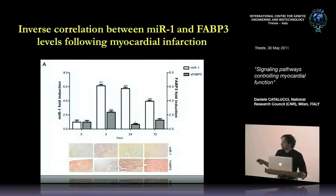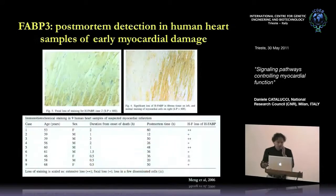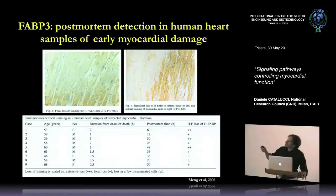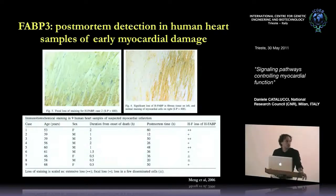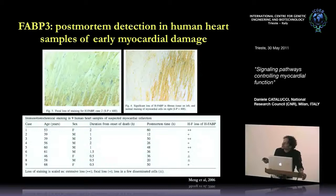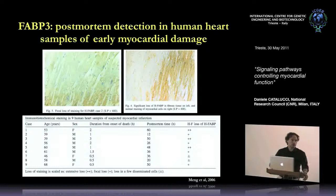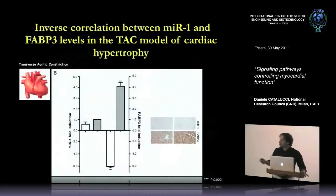We also found supporting evidence in the literature from patients — specifically from biopsies from people who died from infarction. Staining of FABP3 in the tissue shows that the signal intensity decreases depending on the timing after the infarct. There is a strong loss of FABP3 in the tissue around 2–3 hours after the infarct event, which corresponds to what we observed in the mouse model where microRNA-1 is upregulated.